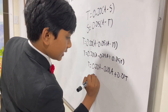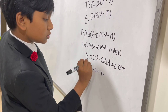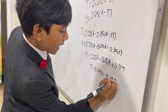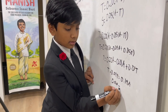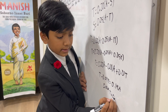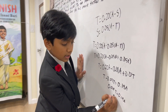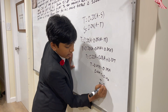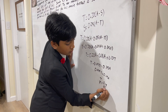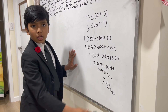That means T minus 0.01T equals 0.19A. So 0.99T equals 0.19A. In other words, T over A equals 0.19 over 99, which is approximately 19% — since the denominator is 99, we can just treat it as 100.